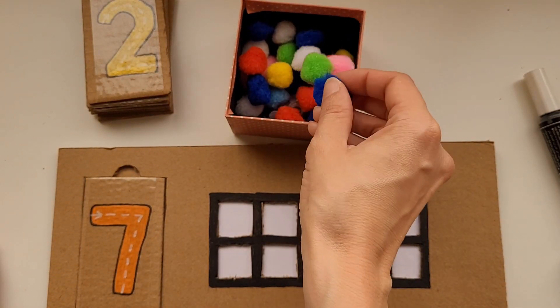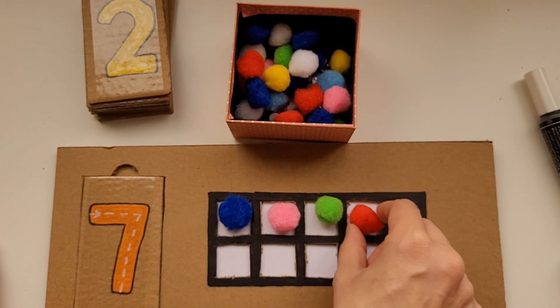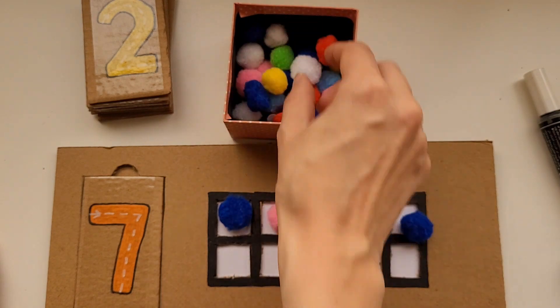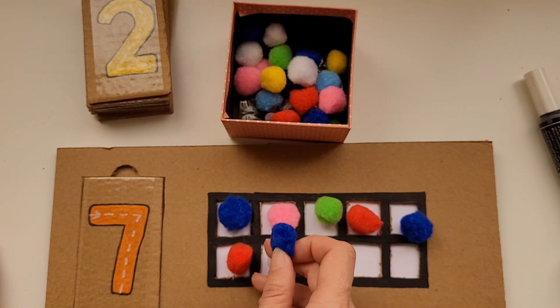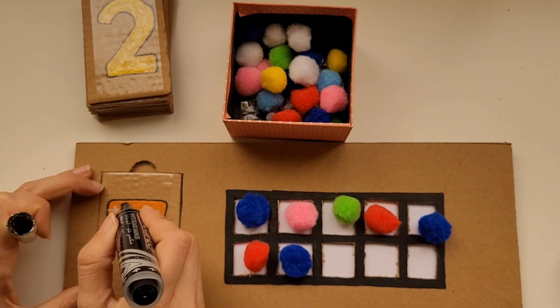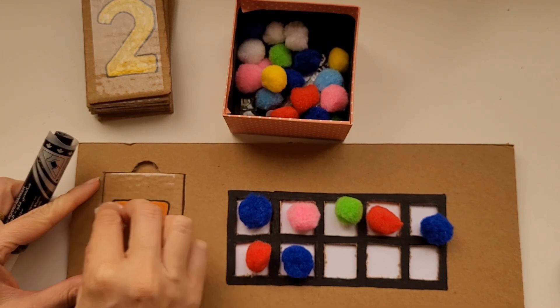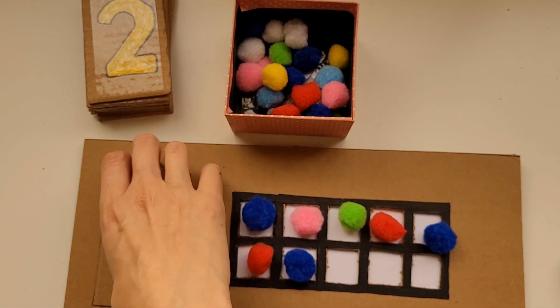Then we're going to pick a card, place it in the rectangle, and then match that number with pom-poms on the 10 frame. After matching the number with pom-poms, your little one can use the marker to practice writing the number 7. Then you can erase it so you can practice again.